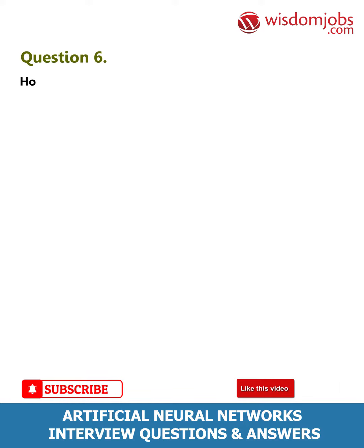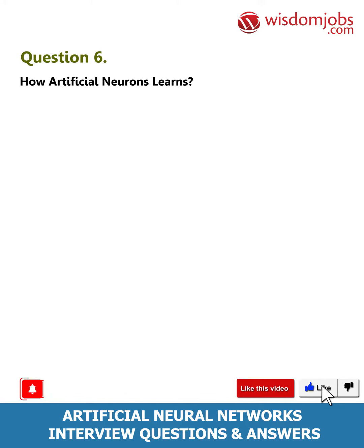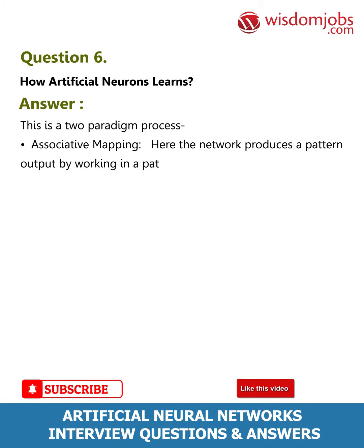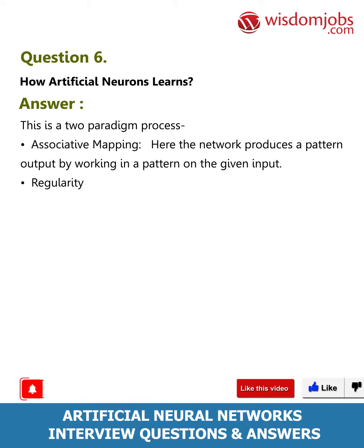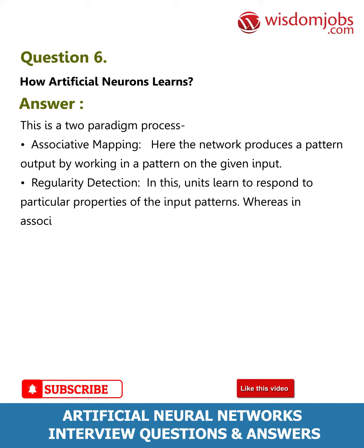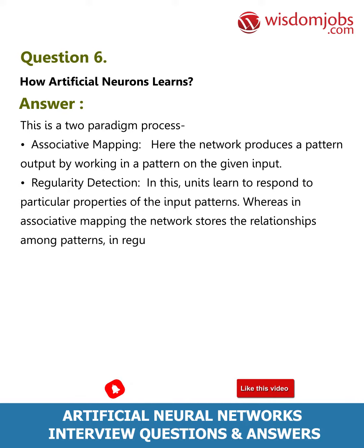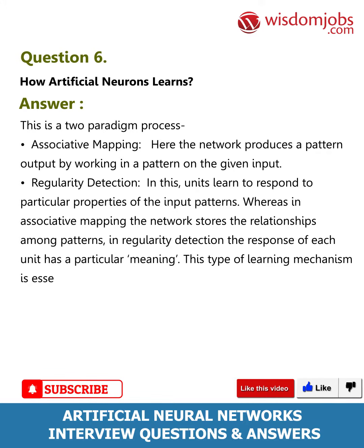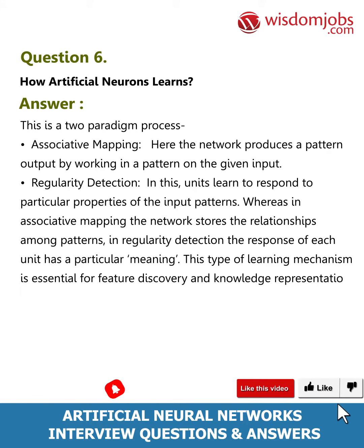Question 6: How do artificial neurons learn? This is a two-paradigm process. Associative mapping: the network produces an output pattern by working on a given input pattern. Regularity detection: units learn to respond to particular properties of input patterns. In associative mapping the network stores relationships among patterns, while in regularity detection the response of each unit has a particular meaning. This type of learning is essential for feature discovery and knowledge representation.